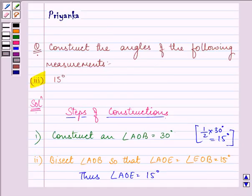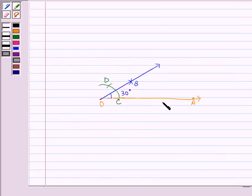So what you need to do is you need to firstly draw an angle of 30 degrees, then draw a bisector OE like this.